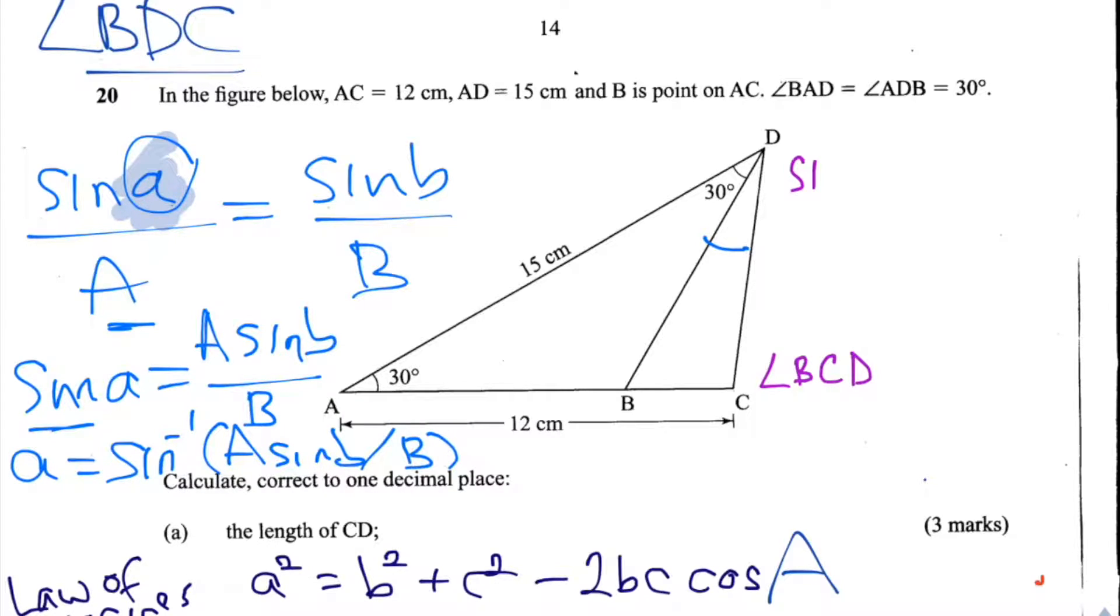So now all we need to do is to find values for A, this length here, B, this other length, and this angle here small b. So how will we do that?